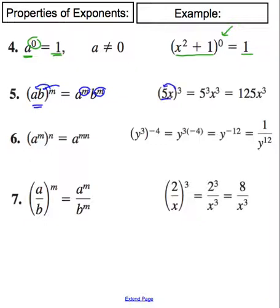So an example would be like 5x cubed. You can distribute that three into both pieces, so it's 5 cubed and x cubed, and then simplify. 5 times 5 times 5 is 125, and then x cubed.